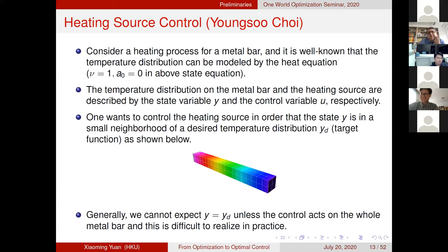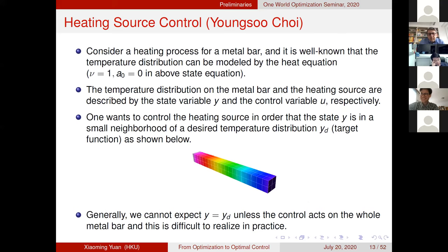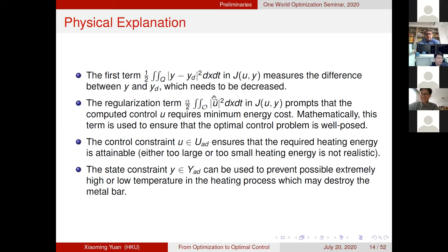As a concrete example, consider heating control of a metal bar. The temperature distribution of the bar is modeled by the heat equation — a special case of the state equation when nu equals one and a equals zero. The temperature distribution and the heating resource correspond to the state variable y and control variable u respectively. We want to control the heating process so that y is in a small neighborhood of the desired temperature distribution y_d. Since we cannot expect y to equal y_d precisely, the first term in the objective should be minimized, along with the regularization term to minimize energy use.